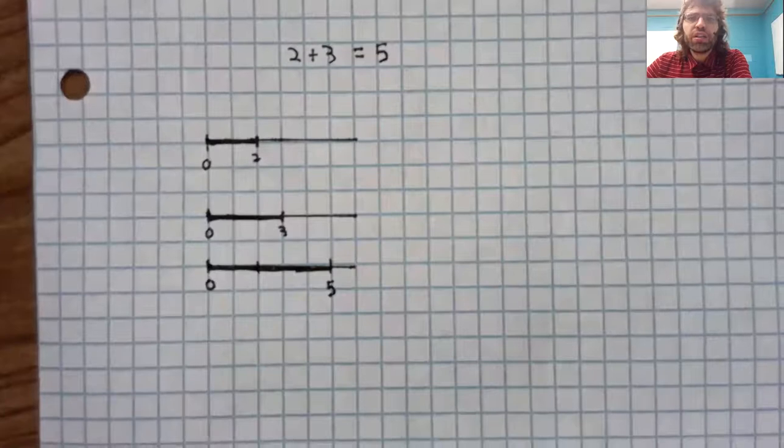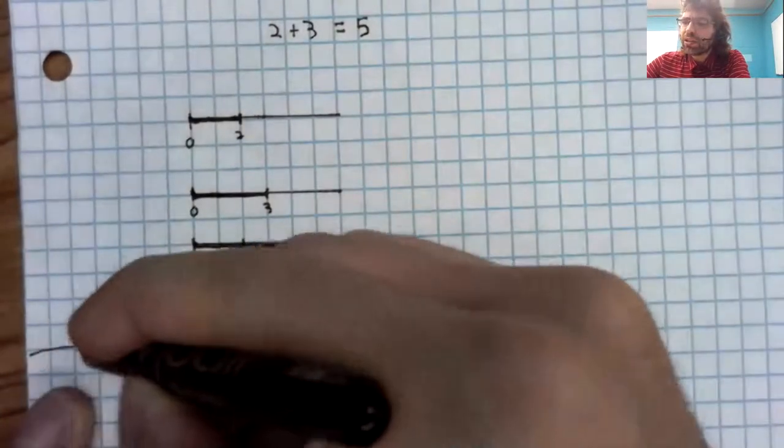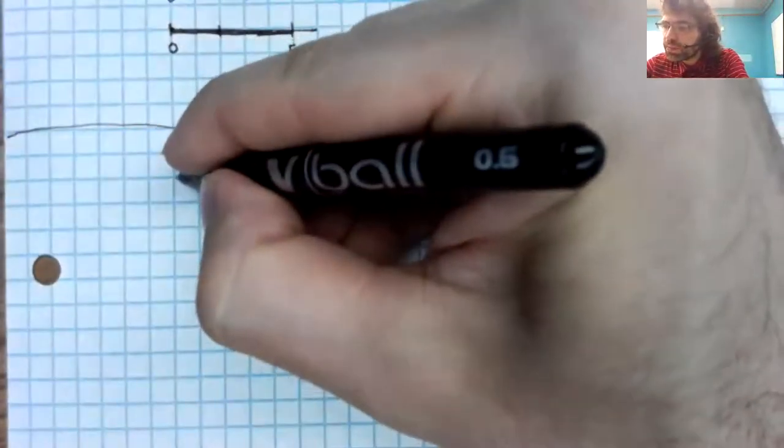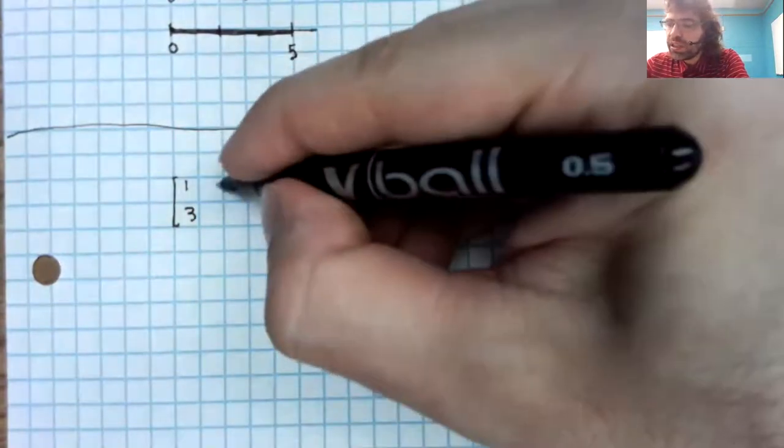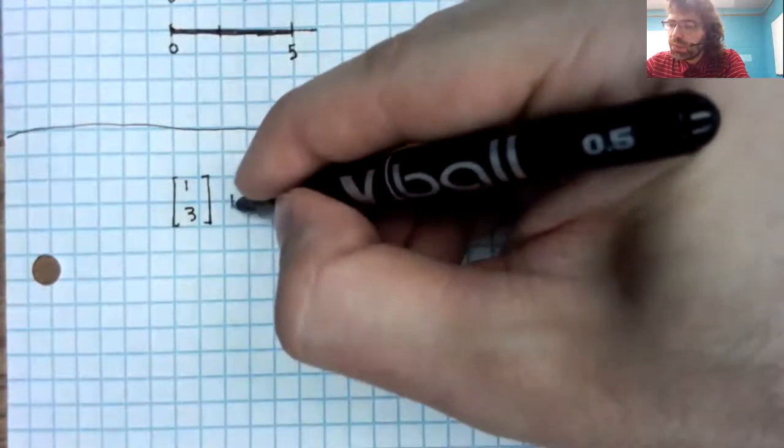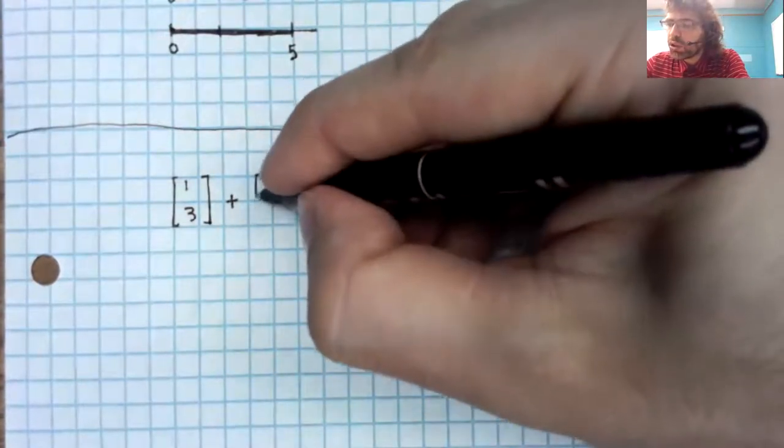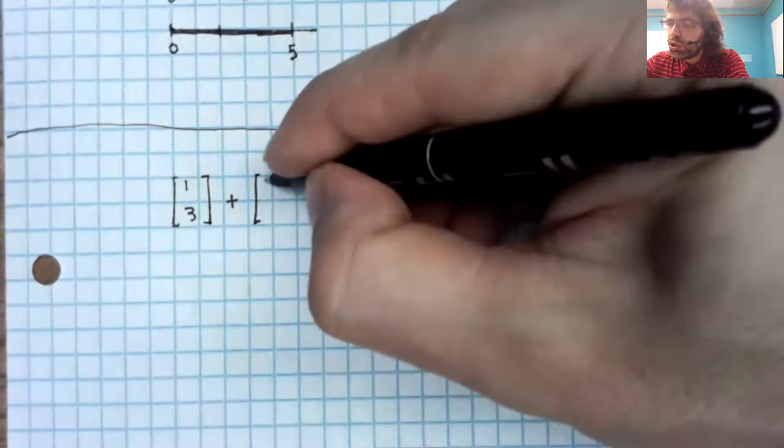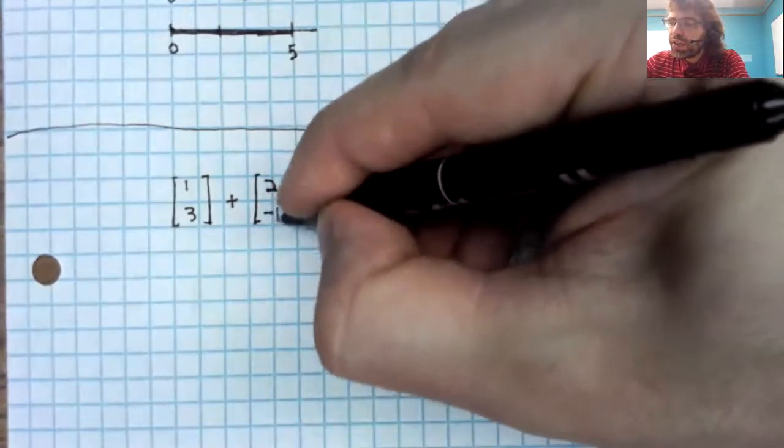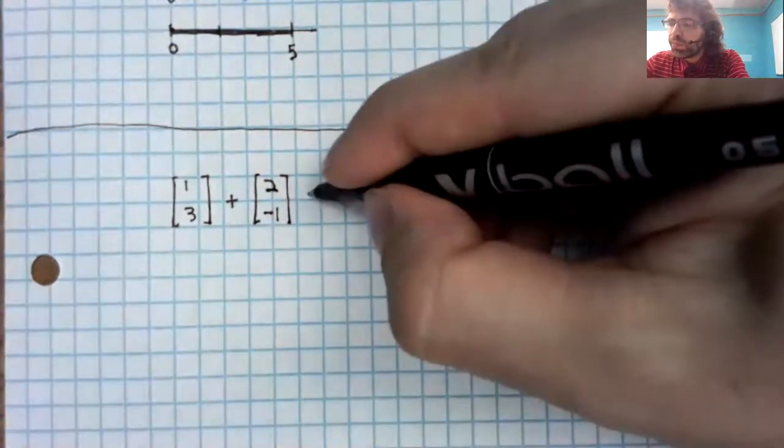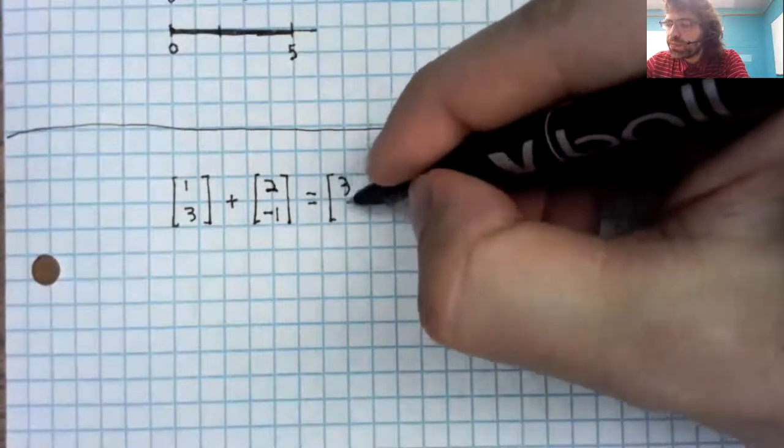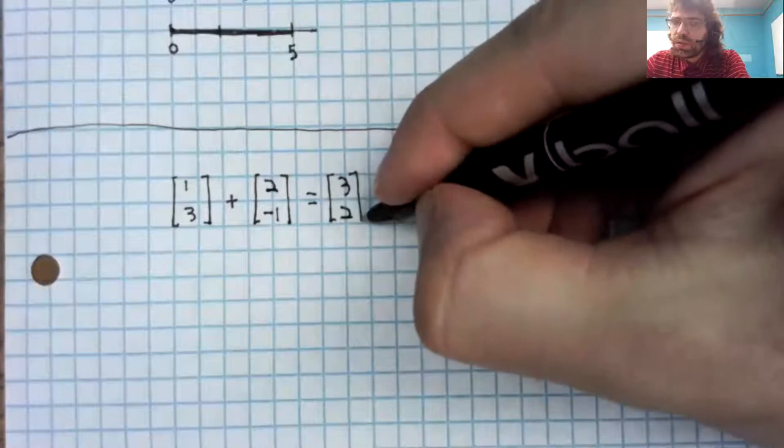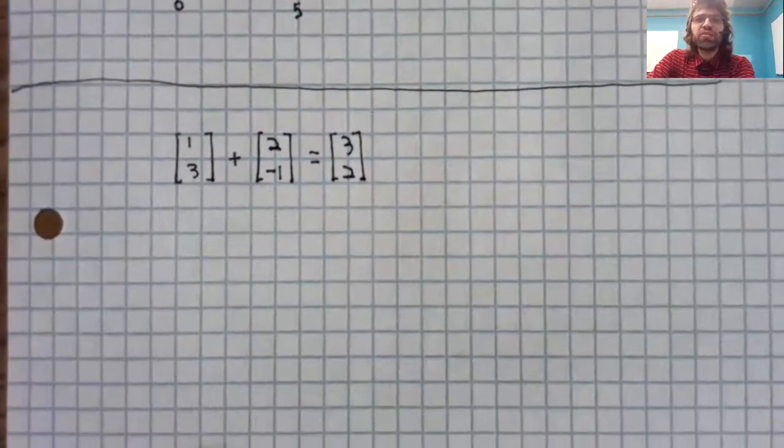Vector addition is just like that. Let's say that we have the vector one, three plus the vector two, negative one. We can do the addition. But let's now look at this graphically.